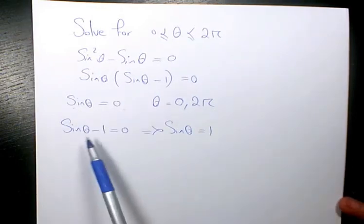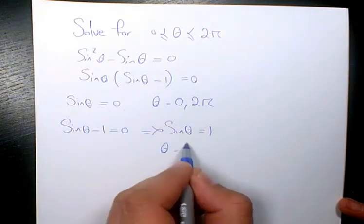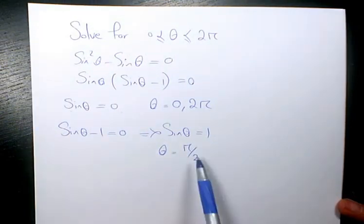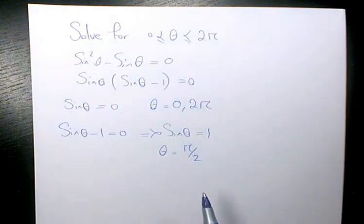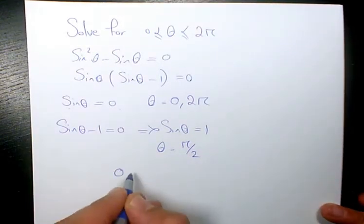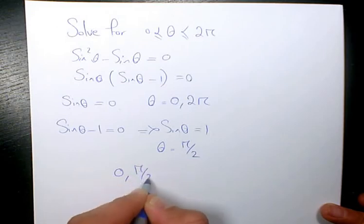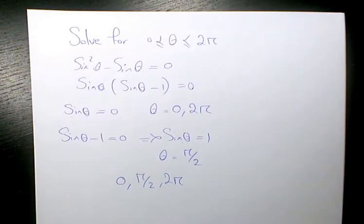And here I have sinθ = 1. We know that when θ equals π/2, sine equals 1. From 0 to 2π, only π/2 makes sine equal to 1. So the answers are 0, π/2, and 2π. These are the three answers to this question.